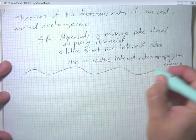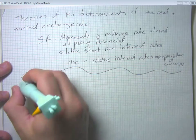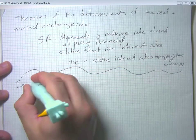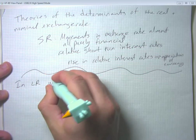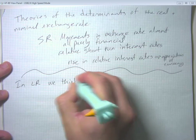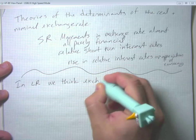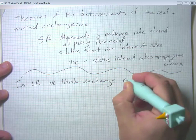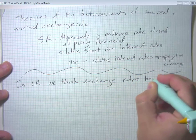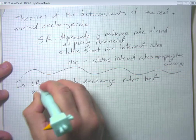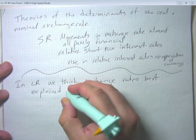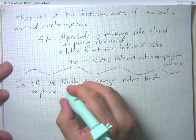But this kind of thing isn't our main topic for this chapter. And in the long run, we think exchange rates are best explained by the sort of arbitrage phenomena that we saw in the last video segment.